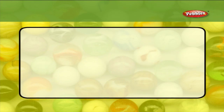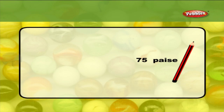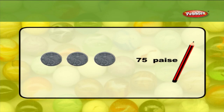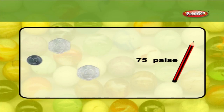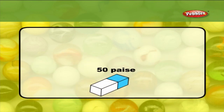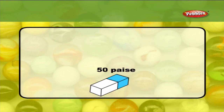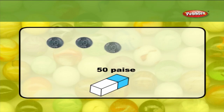Let us see some examples to learn more about the value of money. When you like to buy a pencil worth 75 paise, we can use three 25 paise coins, which equals 75 paise; or one 50 paise and one 25 paise, which equals 75 paise; or one 10 paise, two 20 paise, and one 25 paise, which is also equal to 75 paise. When you like to buy an eraser worth 50 paise, we can use two 25 paise coins, or two 20 paise coins and one 10 paise coin, or five 10 paise coins.